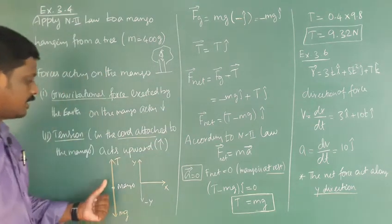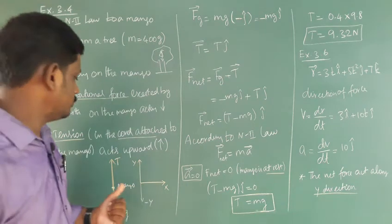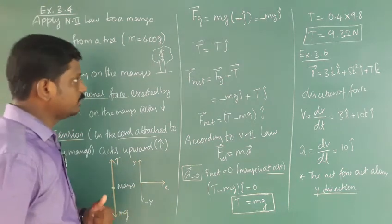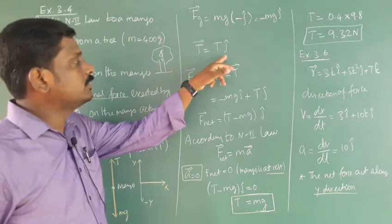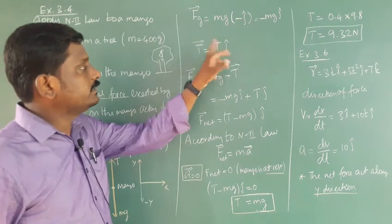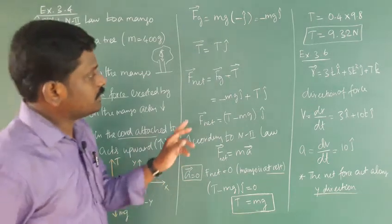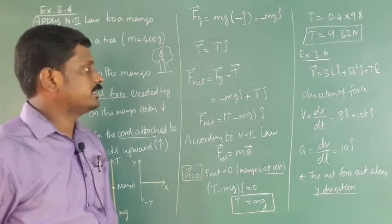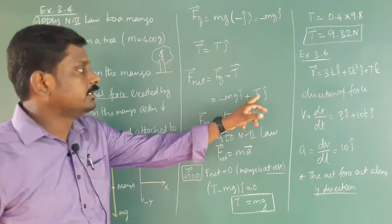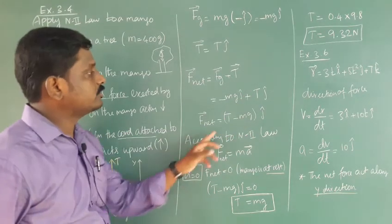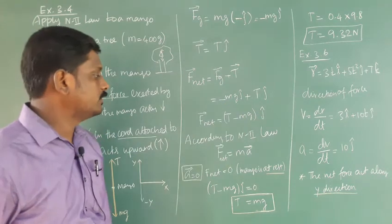The tension acts in the upward direction, that is the positive Y direction. So the tension vector is T ĵ, where T is the magnitude. The net force on the mango is the sum: minus mg ĵ plus T ĵ, which simplifies to (T minus mg) ĵ.